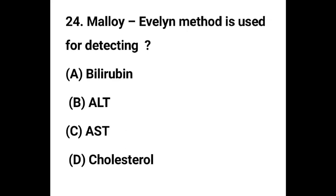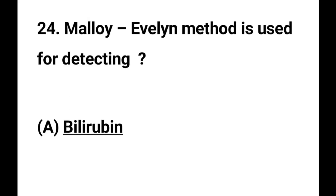Question number 24. Malloy-Evelyn method is used for detecting: Option A - Bilirubin, Option B - ALT, Option C - AST, Option D - Cholesterol. The correct answer is Option A, Bilirubin. Malloy-Evelyn method is used for detecting bilirubin.